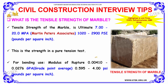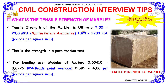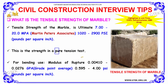What is the tensile strength of marble? The tensile strength of marble is 7 to 20 MPa (megapascals), which equals approximately 1,020 to 2,900 PSI (pounds per square inch). This is the strength measured in a pure tension test.